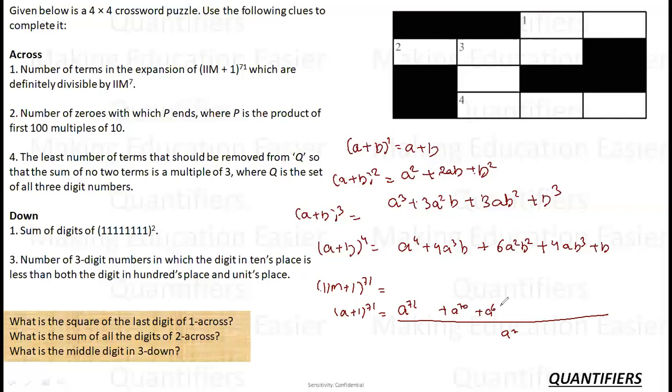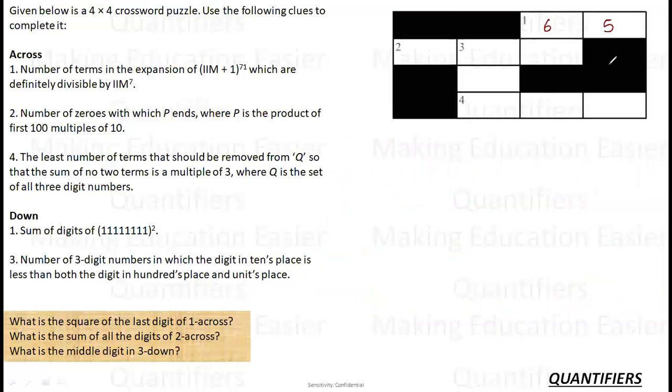A power 71, A power 70, A power 69, A power 68, so on up to A power 3, A power 2 and A power 1. This is a series and A power 0. Now you tell me that how many terms are there which are not divisible by A power 7. From A power 0 to A power 6, these are the 7 terms in the expansion which are not divisible by A power 7. So I can say that in the expansion of m plus 1 power 71, there will be 72 terms. There will be 7 terms from m power 0 to m power 6 which are not divisible and the rest 65 terms are divisible. So our answer would be 65. First across would be 65.